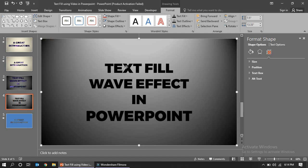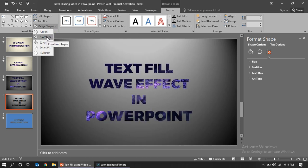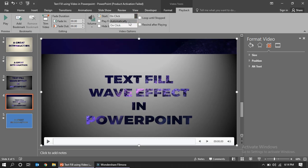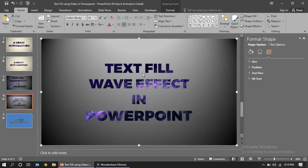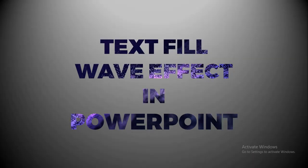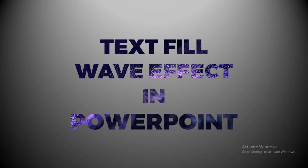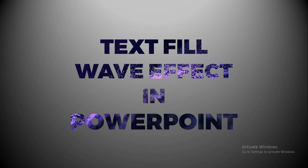Select both the text box and the shape — both items must be selected, otherwise you cannot merge. Go to Merge Shapes and click Combine. Also make sure the video playback option is set to Automatically, not On Click. Now play it — you can see the wave effect inside the text, which depends on the video you put in the background.